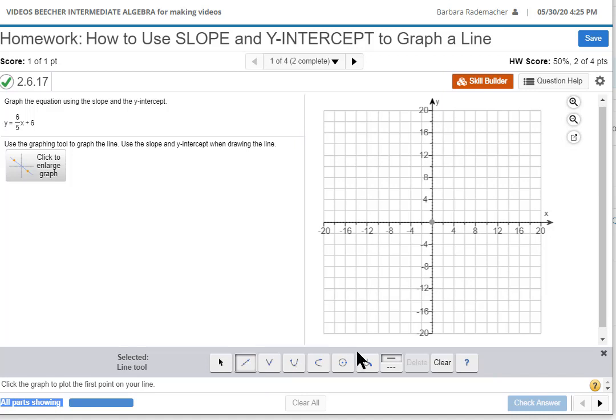Now I go to the grid and I start at 0,0 and I go up 6 units to the y-intercept: 1, 2, 3, 4, 5, 6, and I click.